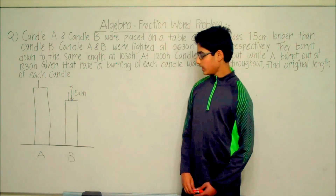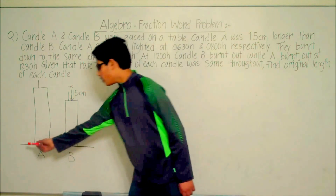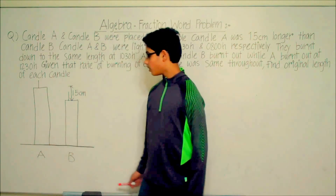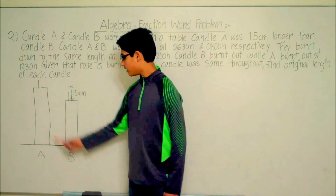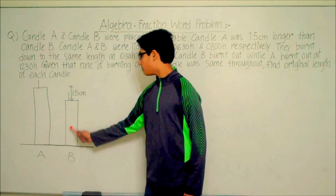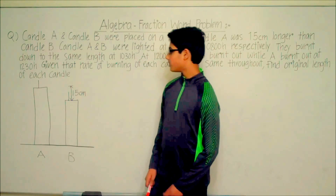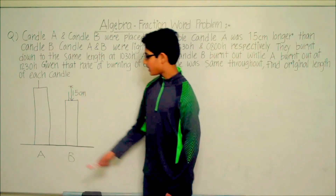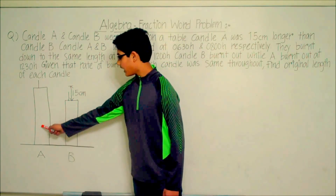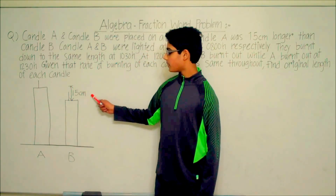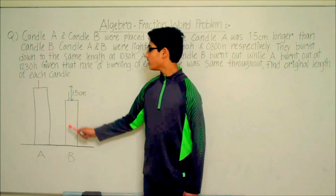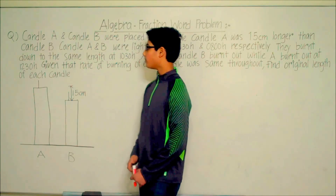So as we can see here, we have a table with Candle A on it and Candle B on it. And as we can see, Candle A is 1.5 cm taller than Candle B.